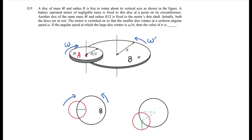On the other hand, connected to the motor shaft is disc A with radius R by 2 and the same mass M. Initially the system is at rest. Then what is the change? The motor is switched on such that disc A rotates with angular velocity omega.